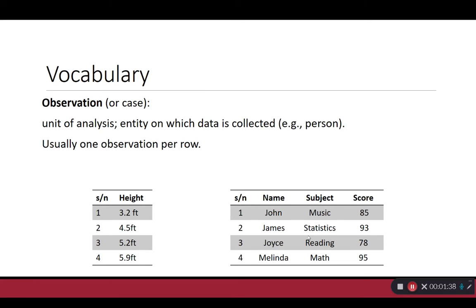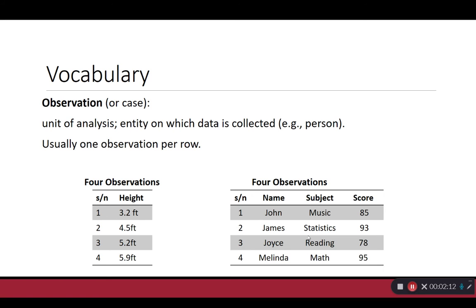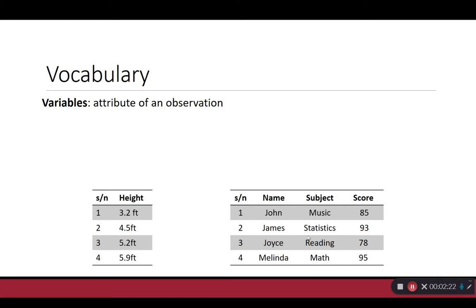We'll begin with some basic data vocabulary. First is observation, or case — this is the unit of analysis, or an individual. We tend to think of one observation per row, or one person per row. In the tables shown, an observation can have both numeric data, such as height, or categorical data, such as name and subject. In the first set of data on the left-hand side we have four observations, and we also have four observations on the right-hand side, even though there are more columns in the data set.